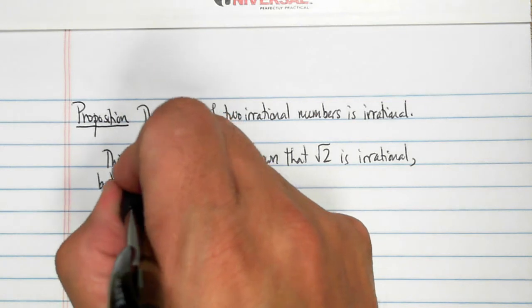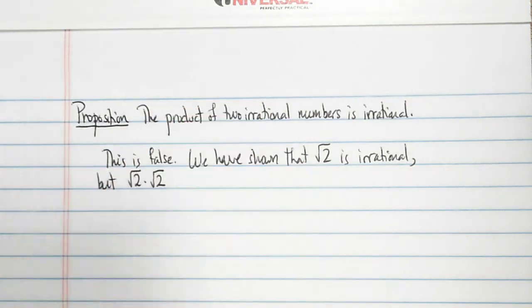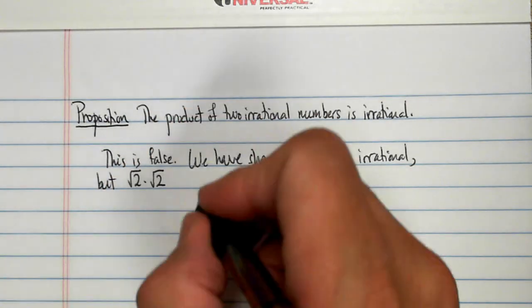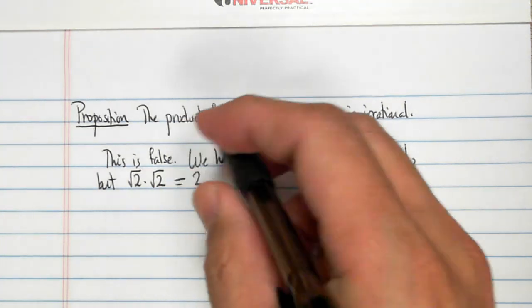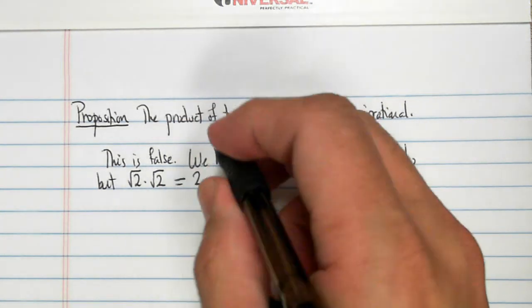But if I take that irrational number times itself, which is irrational, that equals two. And we know that integers are rational.